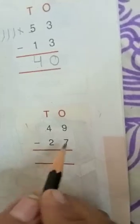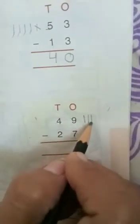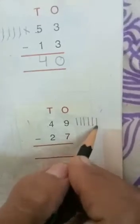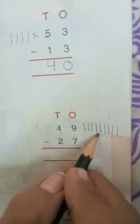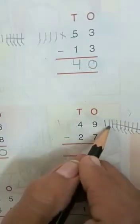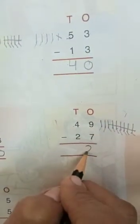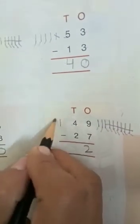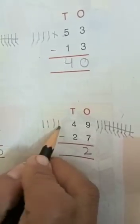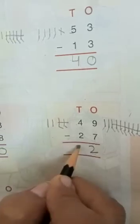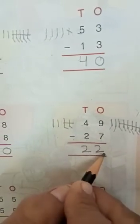Six, seven, eight, nine — you have to take away seven: one, two, three, four, five, six, seven. How many lines are left? One, two. Now four: one, two, three, four — take away two: one, two. The answer is 22.